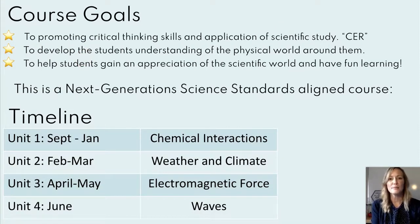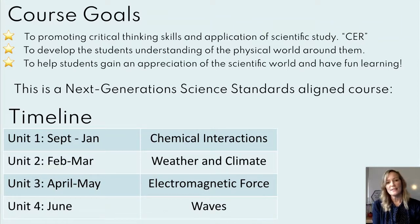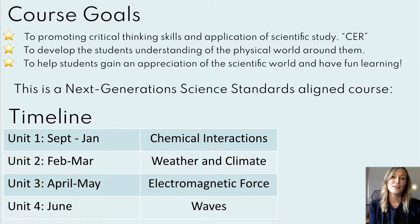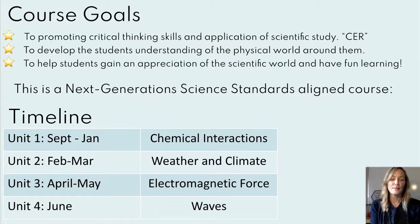Our course goals this year — you can see the timeline I have in the table below. Hopefully we can get through all four main units. This is a Next Generation Science Standards aligned course. We are beginning the year with chemical interactions. Right now we are finishing up investigation one and moving on to investigation two, which covers an introduction to the periodic table of elements. After we finish this unit, we'll move on to weather and climate, and then electromagnetic force and waves.